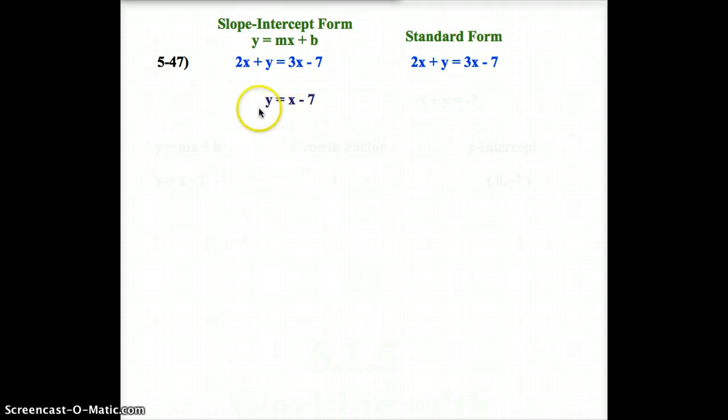The b, which represents the y-intercept, would be negative 7. Now, I'm going to record that information in just a second, but let's do the standard form. Standard form is a little different. For standard form, they want the x's and y's on the exact same side of the equation, and they want your numbers on the other side. So, to get this into standard form, we actually have to subtract 3x from both sides, and when we do that, we end up with negative x plus y on the left side, and our number, negative 7, on the right side. So, now, we are in standard form.